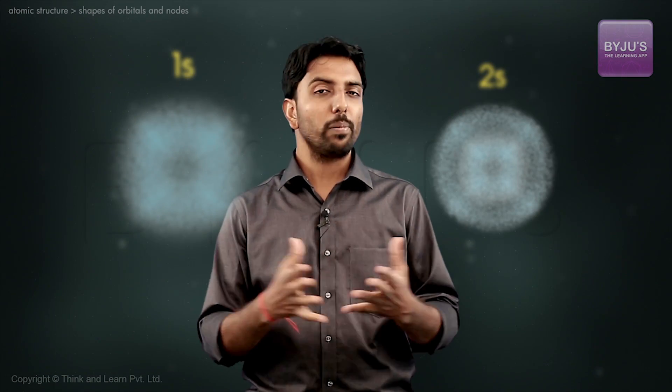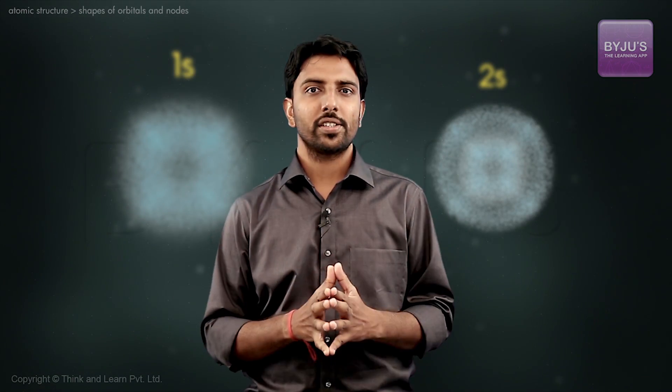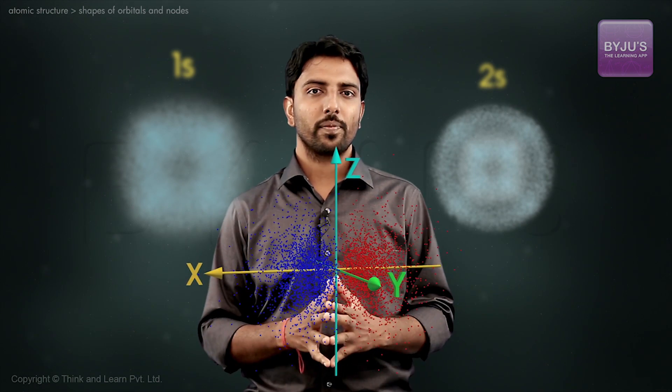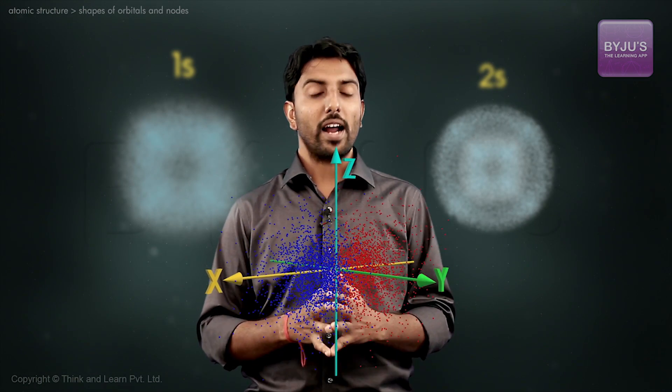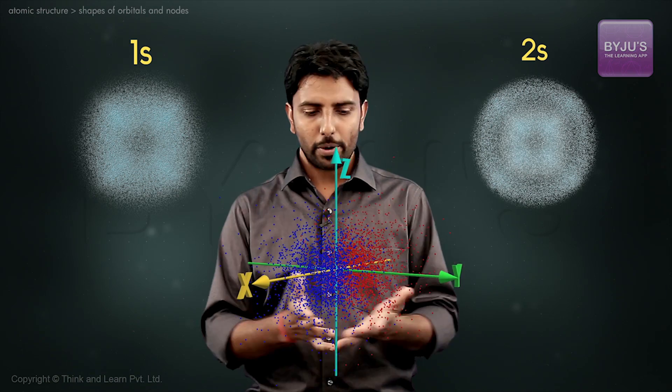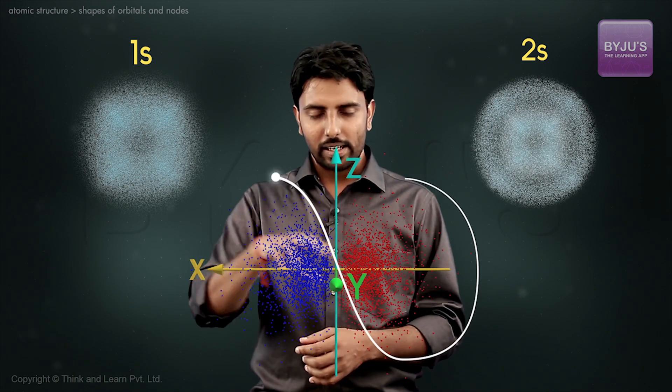But before we get to the implications of orientation, let us look at the electron dot density representations. As you can see, unlike an s orbital, p orbitals are not spherically symmetrical.